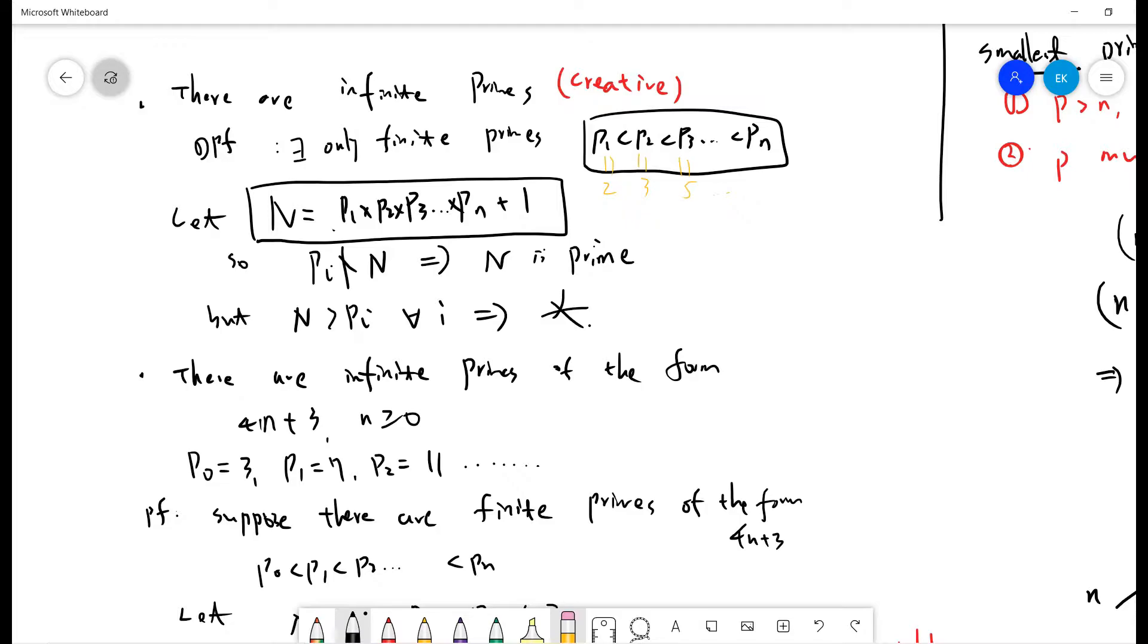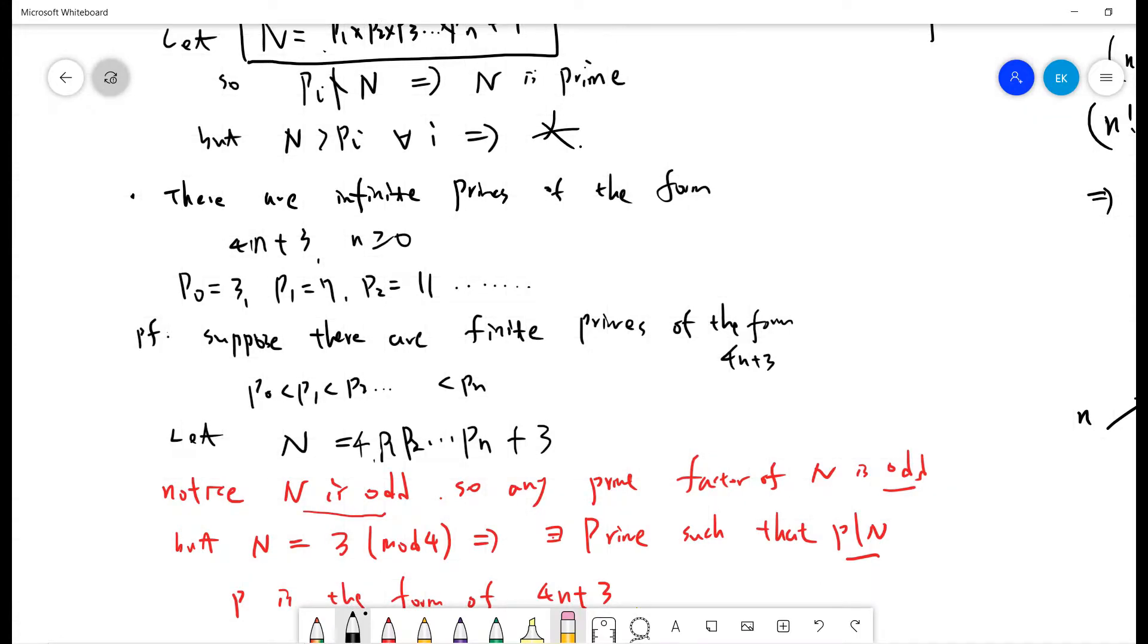Next is there are infinite primes of the form 4n plus 3. This is the test example. Maybe if you learn number theory in the course, this is a good homework. So 4n plus 3: when n equals 0 it's 3, which is prime; n equals 1 is 7, which is prime; 11 is prime.